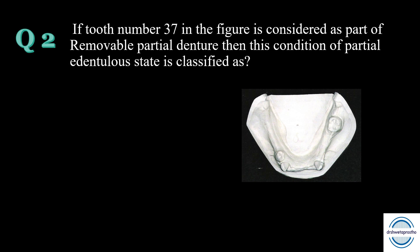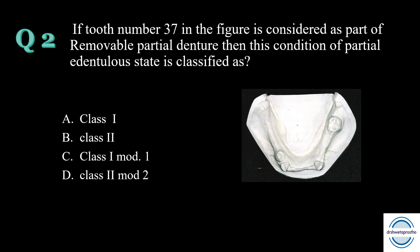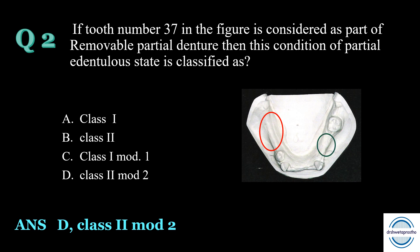Question number two: if tooth number 37 in the figure is considered as part of a removable partial denture, then this condition of partial edentulous state is classified as — using Kennedy's classification. Options: A. Class 1, B. Class 2, C. Class 1 mod 1, D. Class 2 mod 2. The answer is D, Class 2 mod 2. This is the most posterior edentulous space making it Class 2, with two modification spaces, so it is Class 2 mod 2.